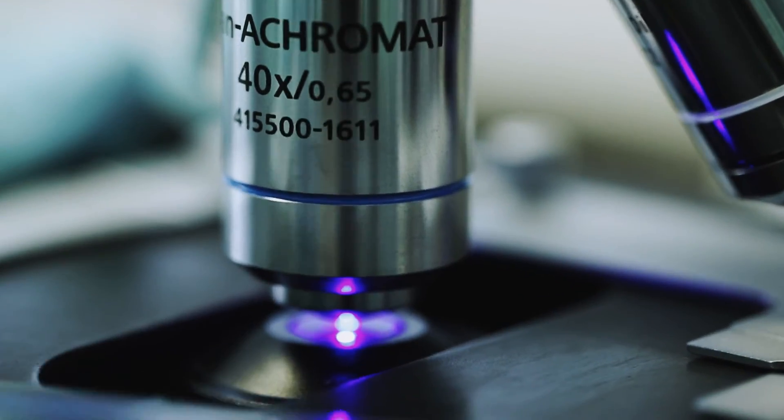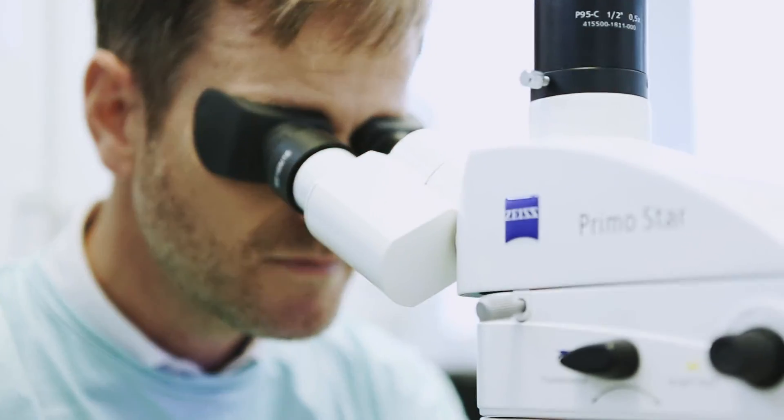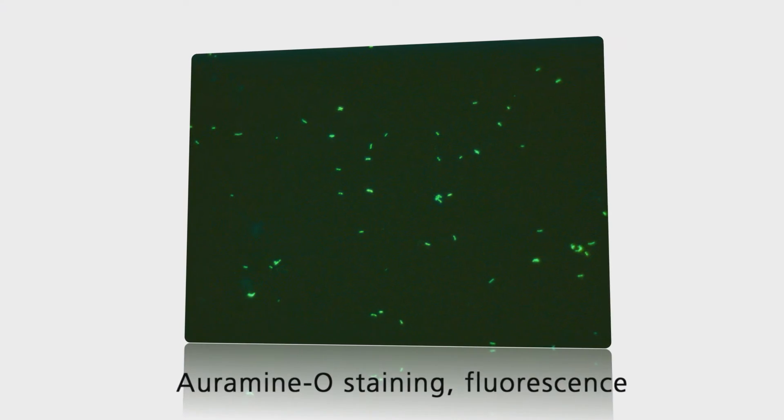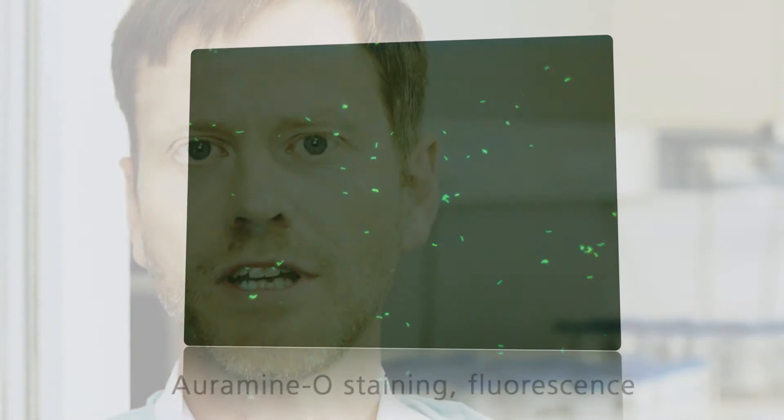Under the fluorescence microscope, you will see any tuberculosis bacteria contrasted against a dark background as luminous rods. You'll get a negative result if you don't find any acid-fast rods in at least 100 to 300 fields of view.